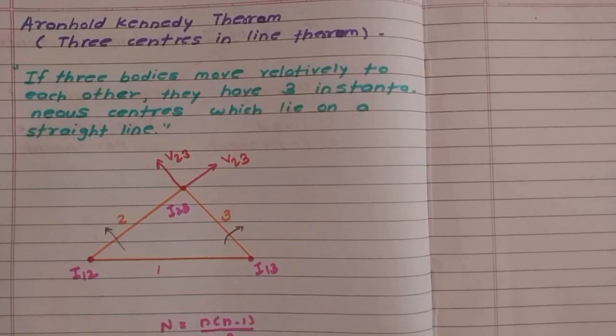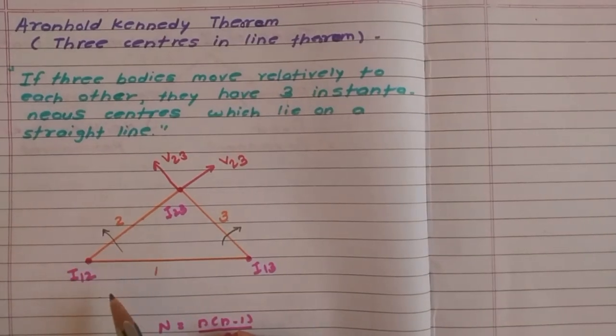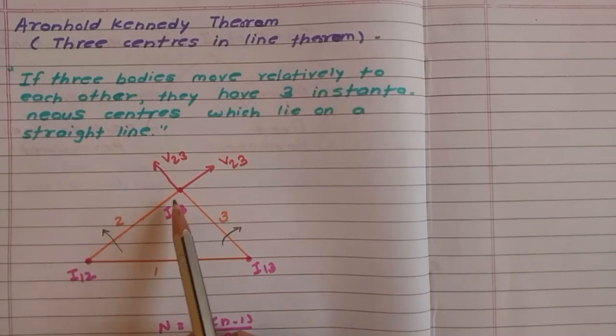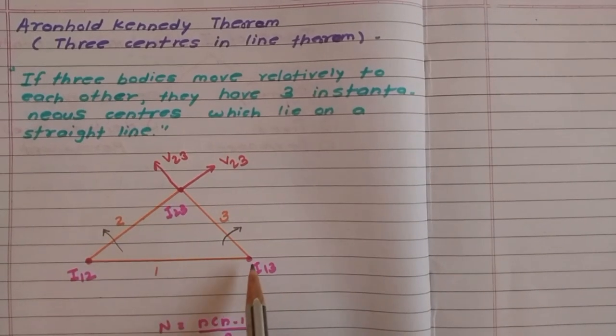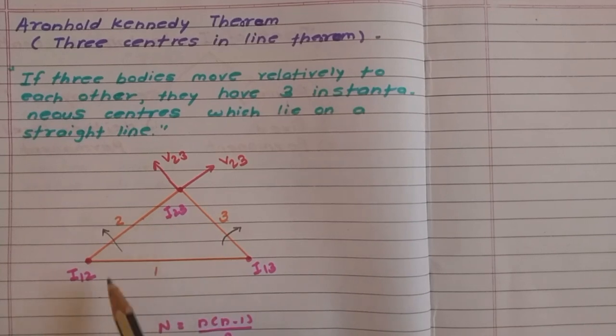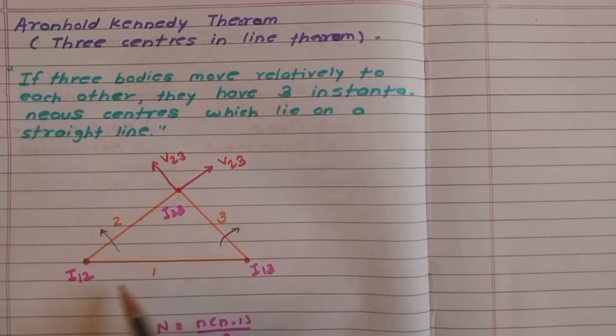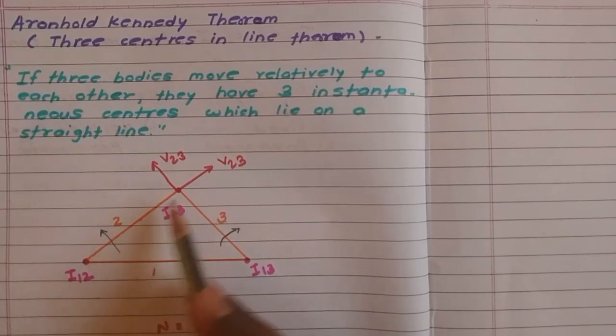We have shown here at each joint, link number 1 and 2 are joined, so I12. Here I23, and I13. So 3 instantaneous centers are there, but not on a single line. On each line, 2 instantaneous centers are there.